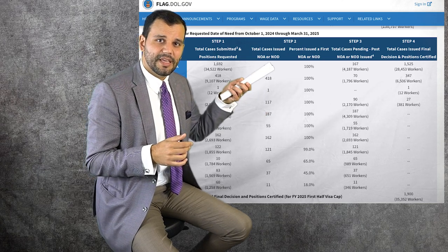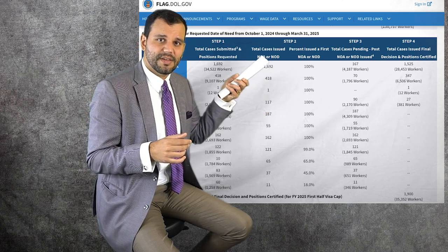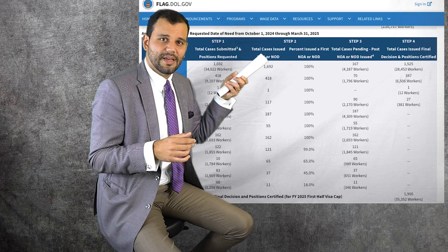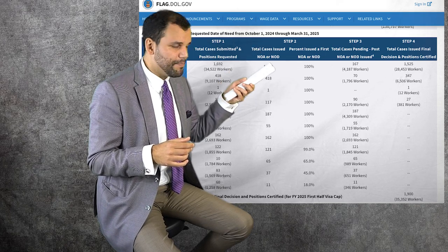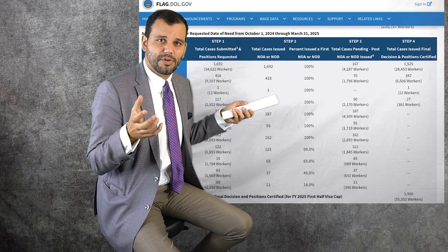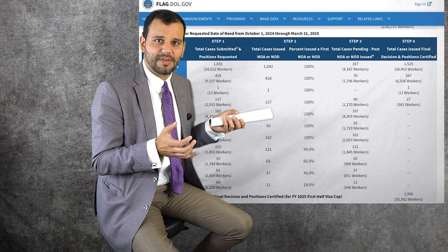So DOL again, you're seeing in those numbers even the H2B visas that are cap exempt, whereas in the USCIS number, you're only seeing the ones that are cap dependent. That's why there's a difference.